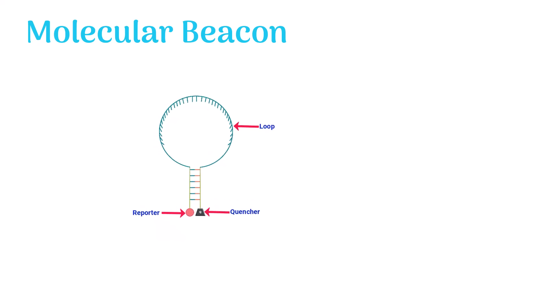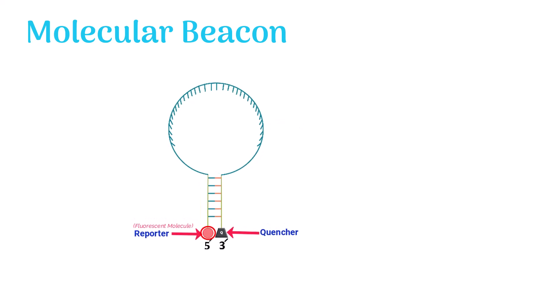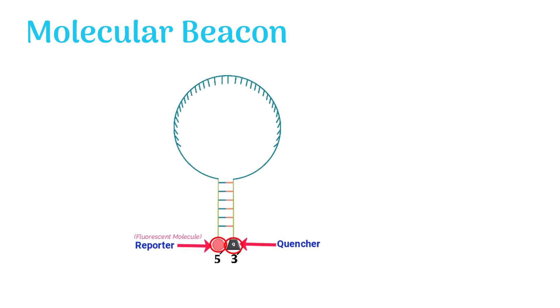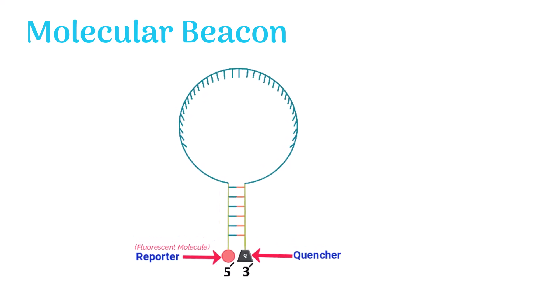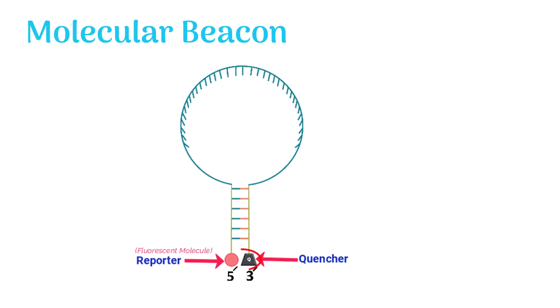Both five prime and three prime ends of the molecular beacon contain a fluorescent dye, also known as the reporter, and a quencher. Molecular beacon does not cause fluorescence in free form because the quencher and fluorescent dye are near to each other.